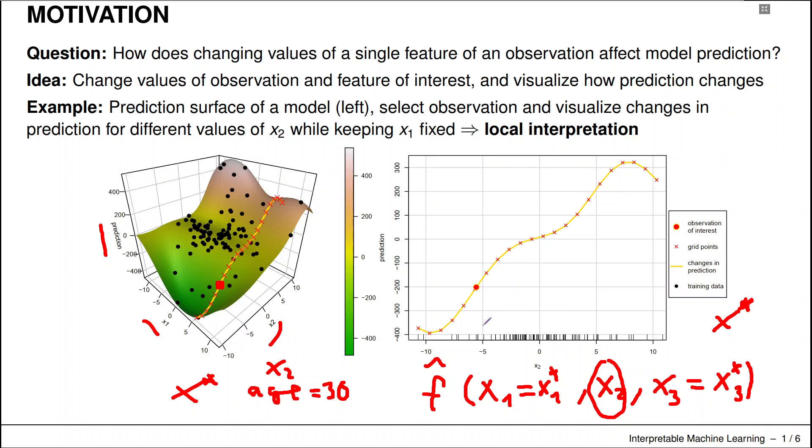We can ask: what would happen if the person is 25 years old, 35 years old, 40 years old and so on, while all other feature values stay the same.